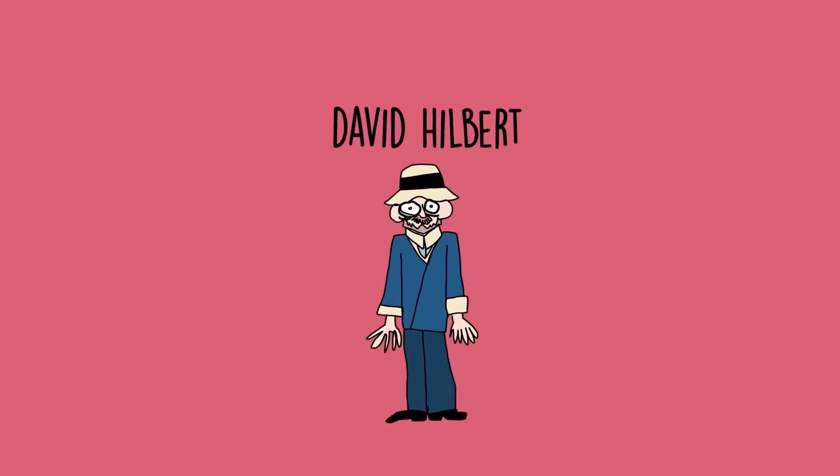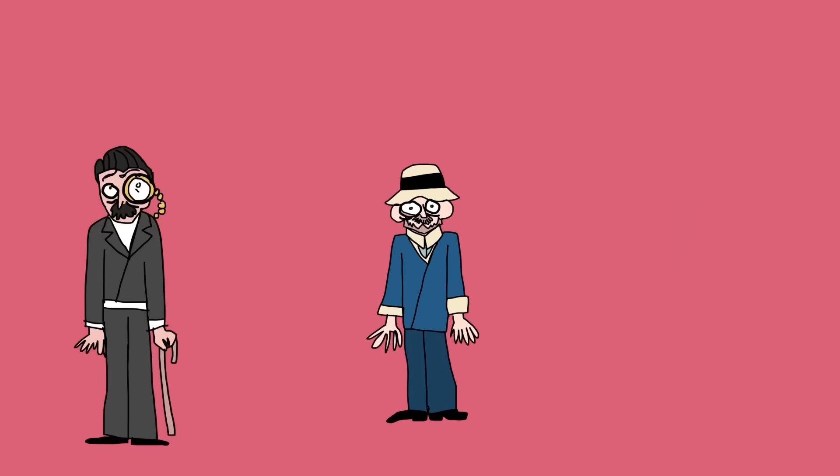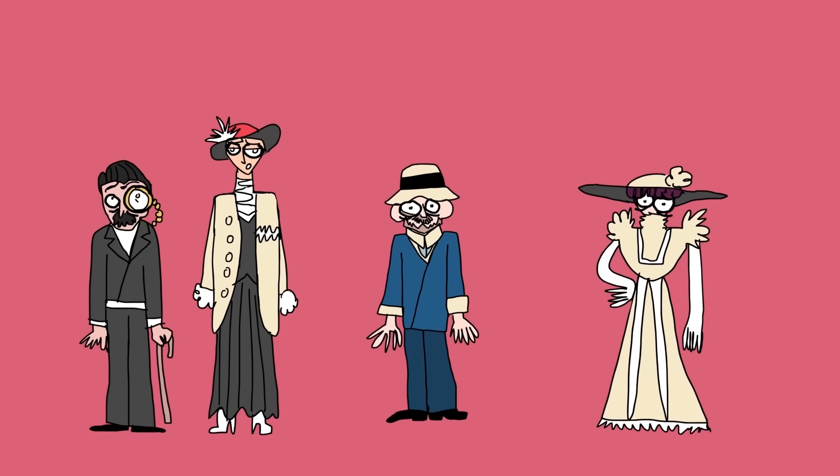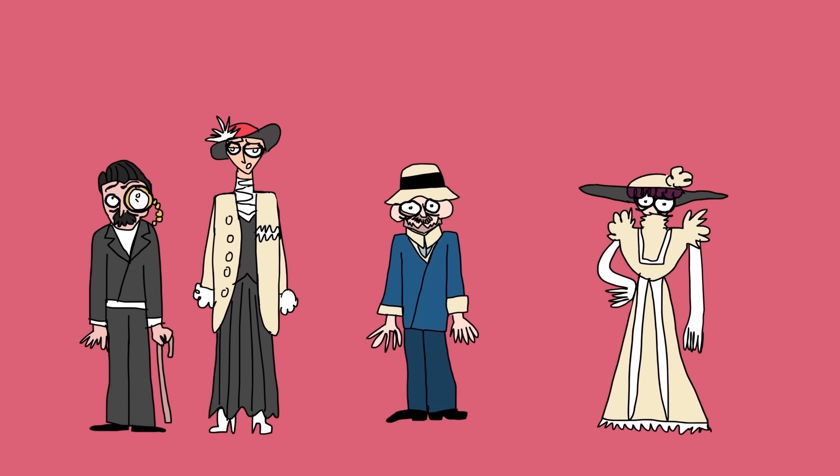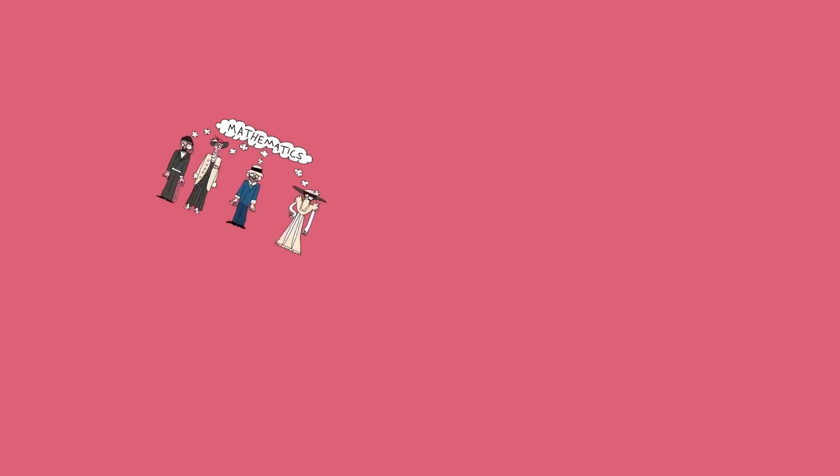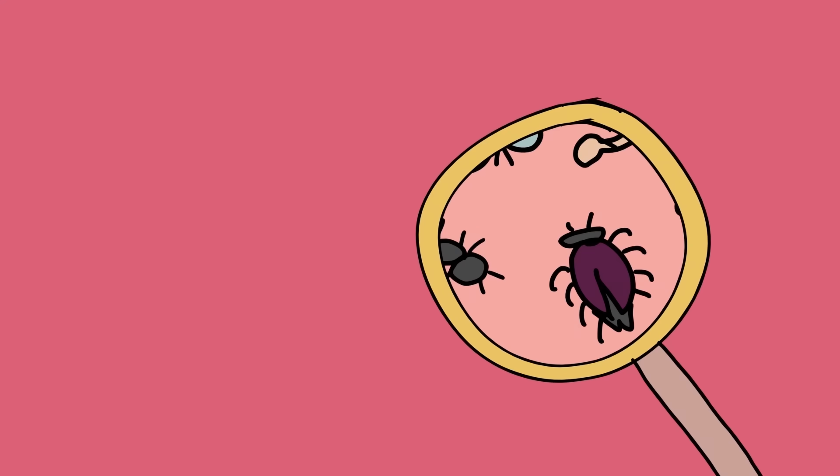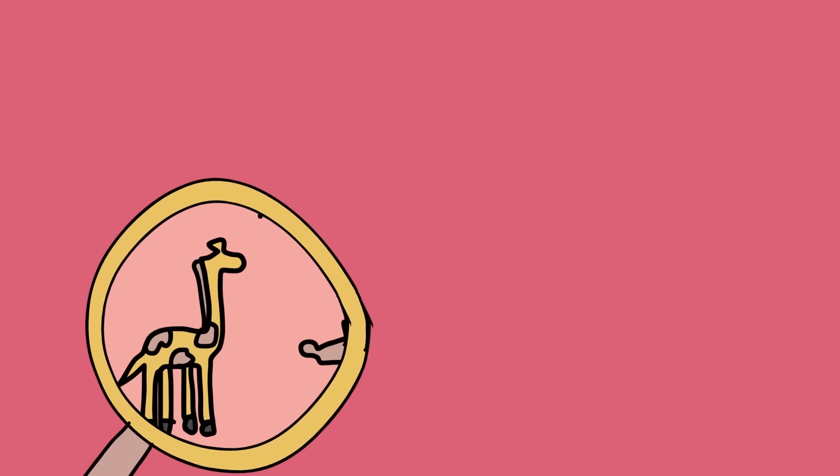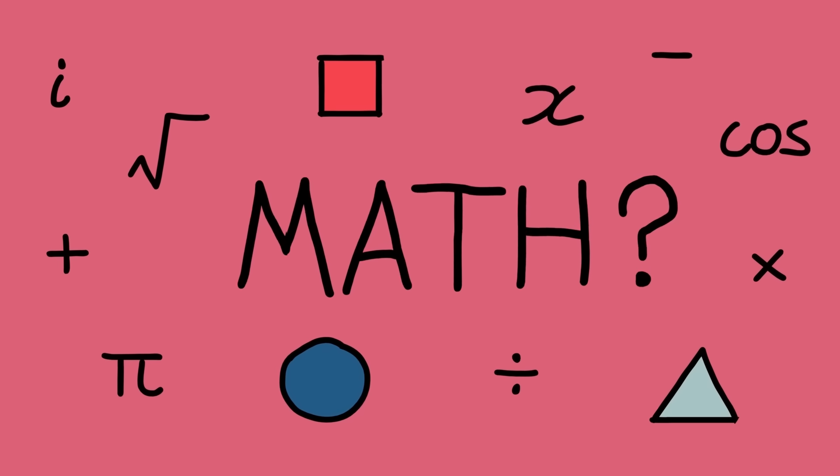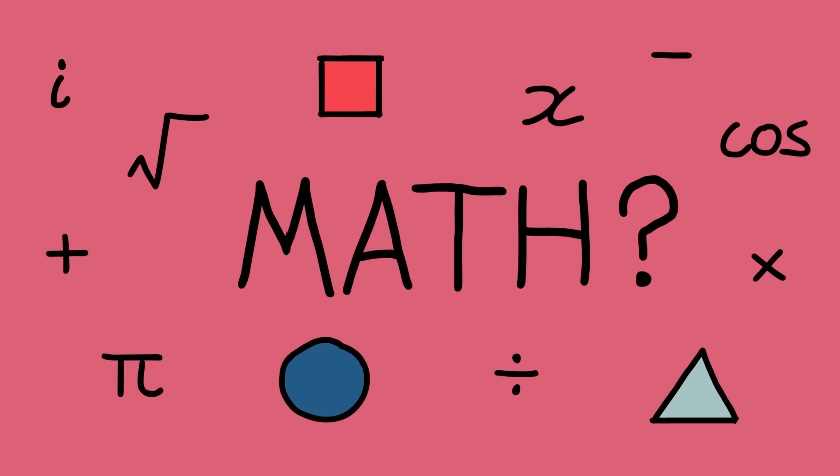The story starts with an extraordinary man named David Hilbert. He lived at a very exciting time in the history of mathematics. See back in the 1900s it had come to light that no one was really sure what they were studying when they were studying mathematics. When we study biology we're studying living things that exist in the real world. When we study physics we're studying real world phenomena which we can verify via experiment. But math? Was it the study of real world objects or abstract entities? Did it exist in our minds or in some other realm of existence?